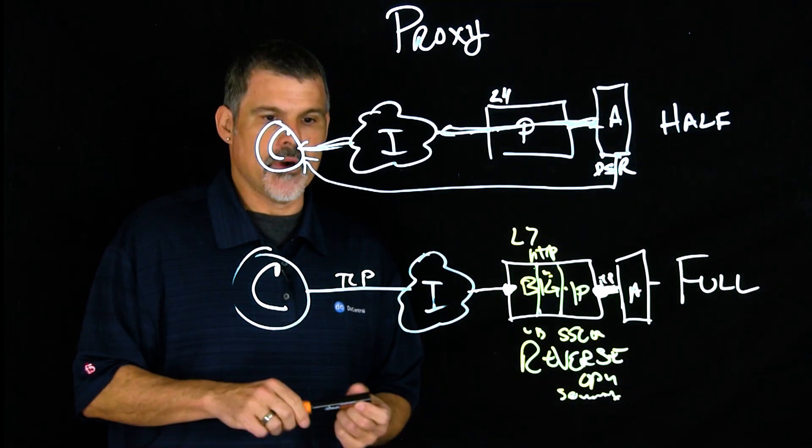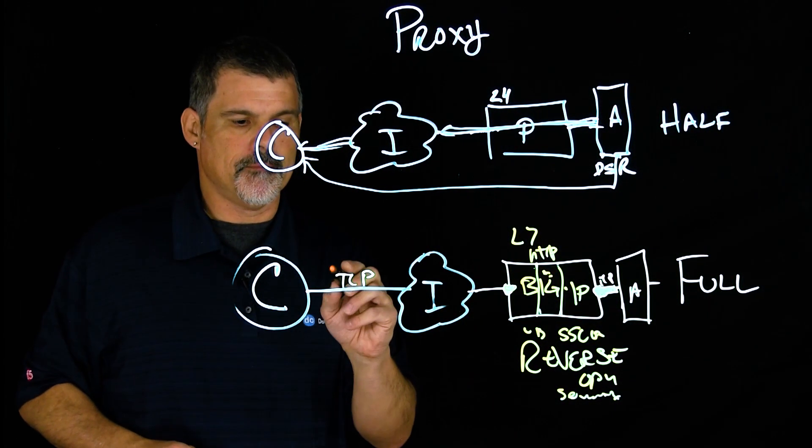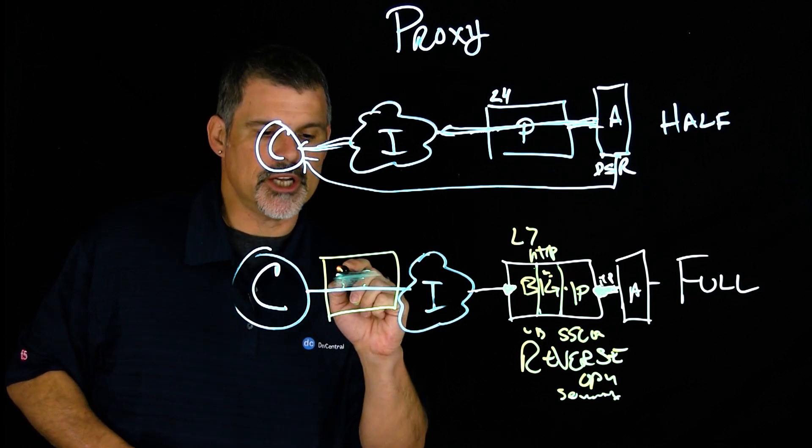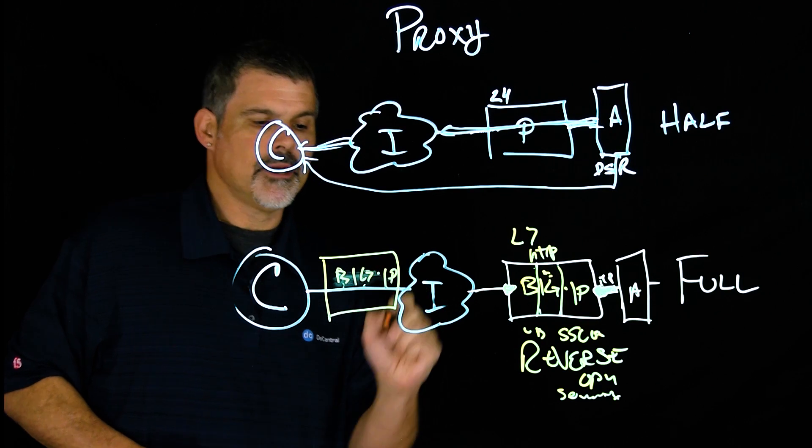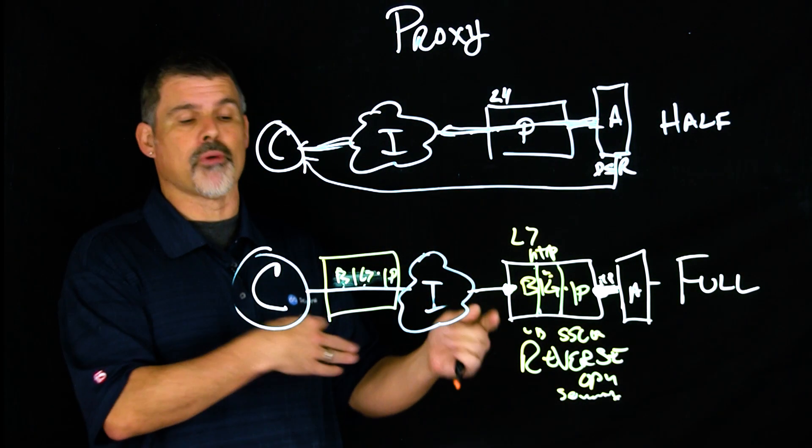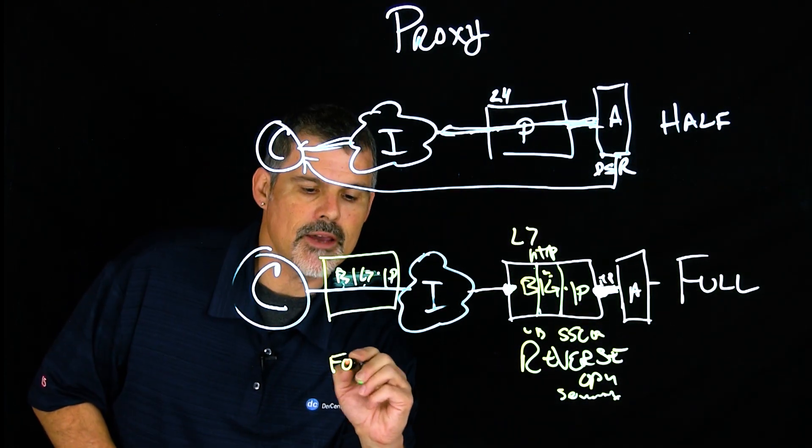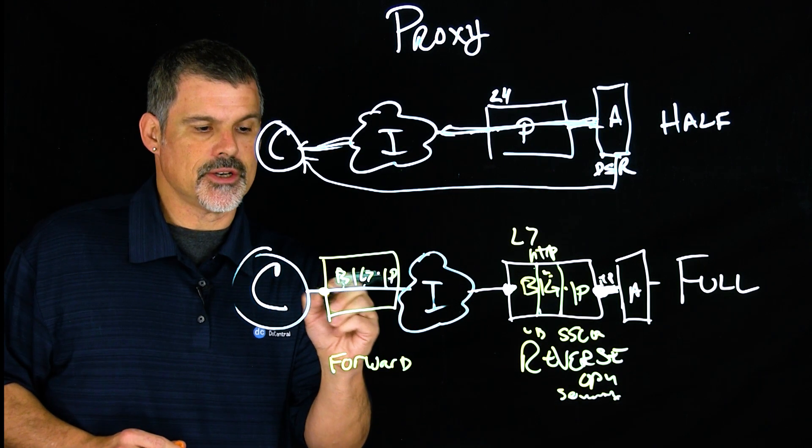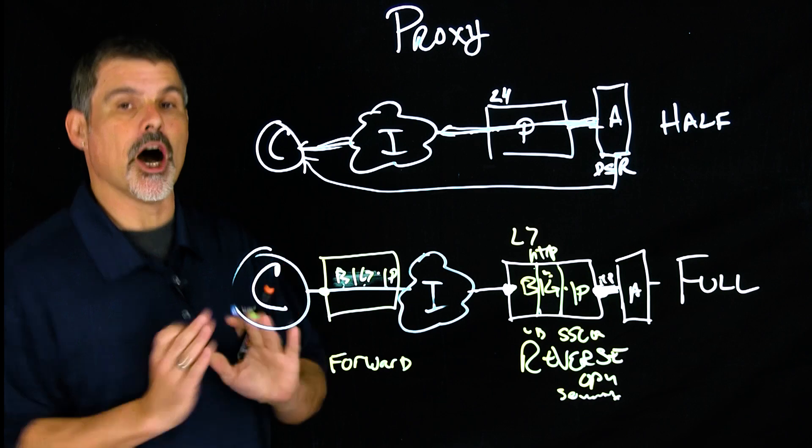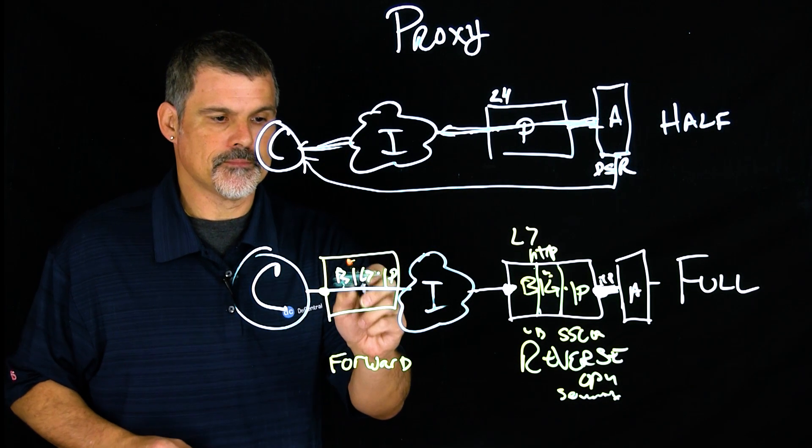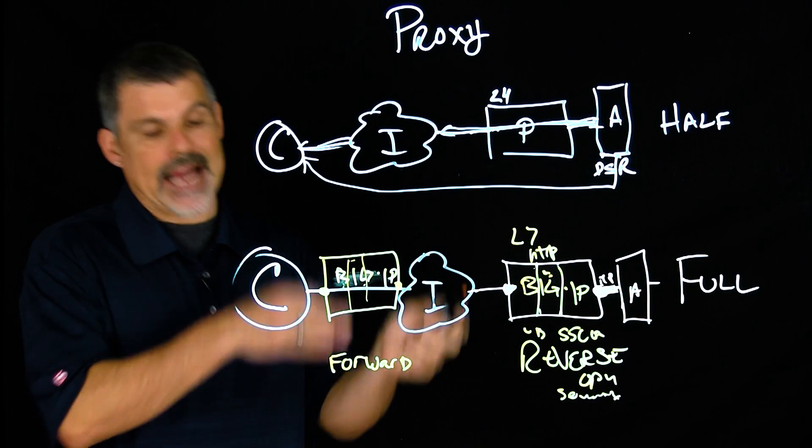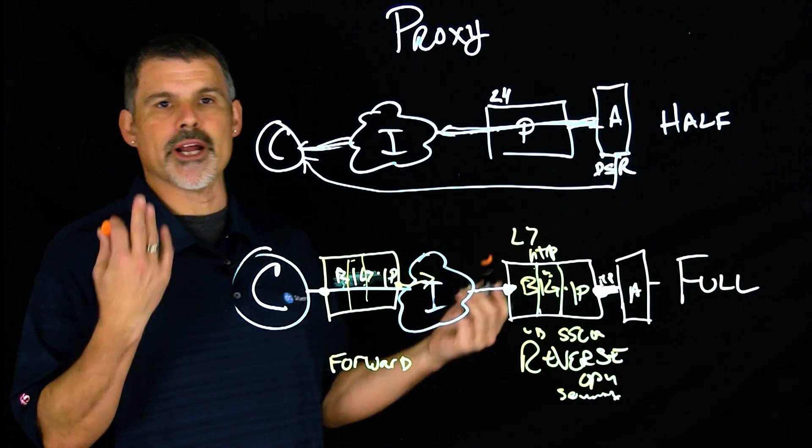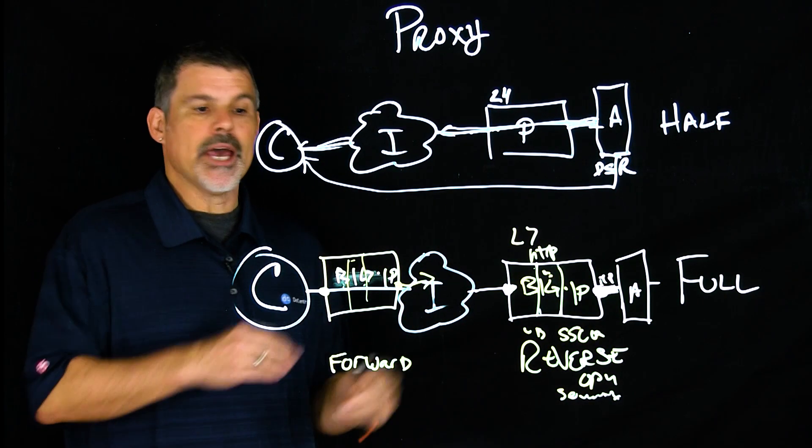And so now if we then put Big IP over on the client side, Big IP. Now in this situation, on the client side, as a full proxy, this Big IP would be a forward proxy. And so again, client connects to the forward proxy, to the Big IP on the outbound request. And in this situation, the proxy will act on behalf of this client and then go out to the internet to retrieve whatever resources were requested.